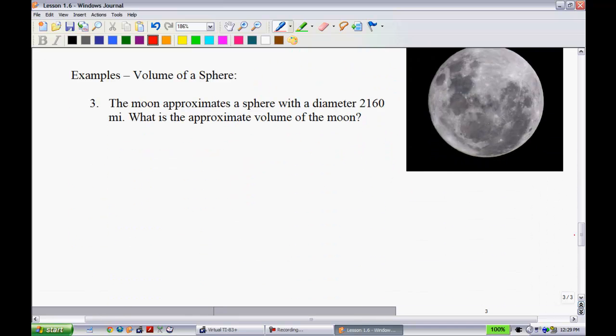Let's go to the next page. We have the volume of a sphere. The moon approximates a sphere with a diameter of 2,160 miles. That's fairly big. What is the approximate volume of the moon? All right, let's try this. So, volume is equal to (4/3)πr³. So, I have (4/3)π, and then for the radius, what am I going to put in there?